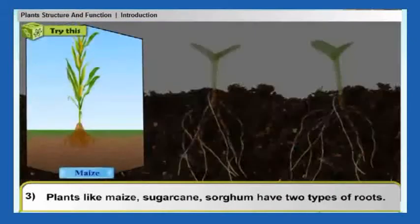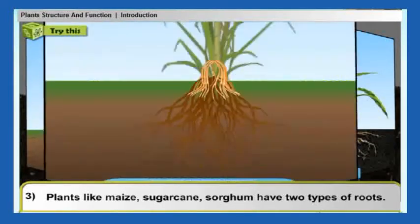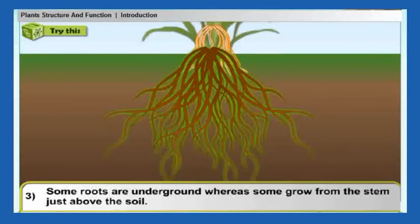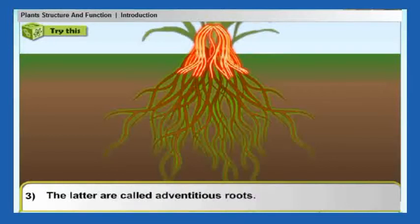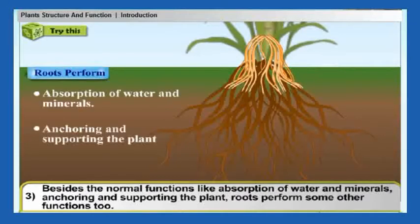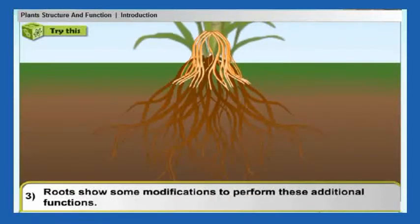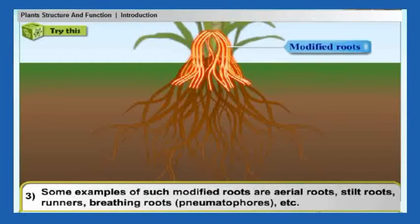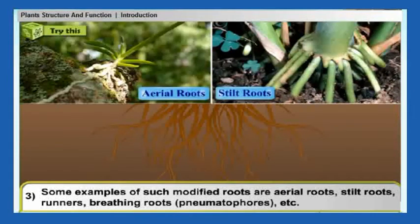Plants like maize, sugarcane, and sorghum have two types of roots: some roots are underground, whereas some grow from the stem just above the soil. The latter are called adventitious roots. Besides the normal functions like absorption of water and minerals, anchoring and supporting the plant, roots perform some other functions too. Roots show some modifications to perform these additional functions. Some examples of such modified roots are aerial roots, stilt roots, and runners.